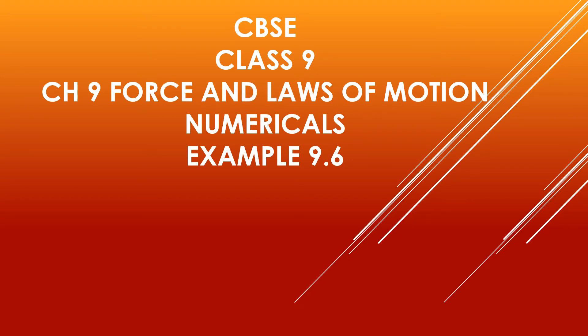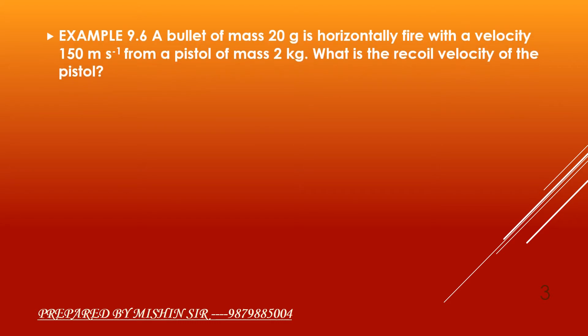Today, we are going to learn numericals of Chapter 9, Force and Laws of Motion of Class 9 in CBSE. Example 9.6: A bullet of mass 20 gram is horizontally fired with a velocity of 115 meter per second from a pistol of mass 2 kg. What is the recoil velocity of the pistol?